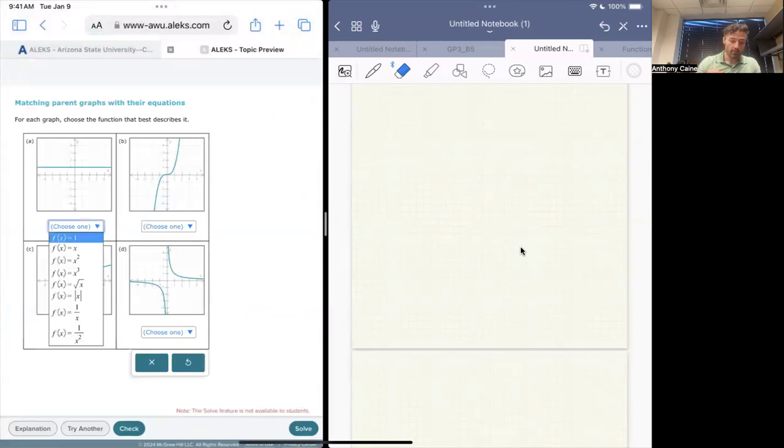This is just a flat line. That would be like y is a constant, right? X can move, we can move horizontally, but y is a constant. We're not moving vertically. And when I say y is a constant, that's as good as saying f of x equals one.